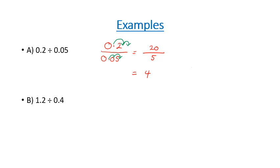In our second question we've got 1.2 divided by 0.4. We can see straight away that if we move the decimal place one spot on both the numerator and the denominator, we end up with whole numbers. That gives us 12 over 4, and 12 divided by 4 is 3.